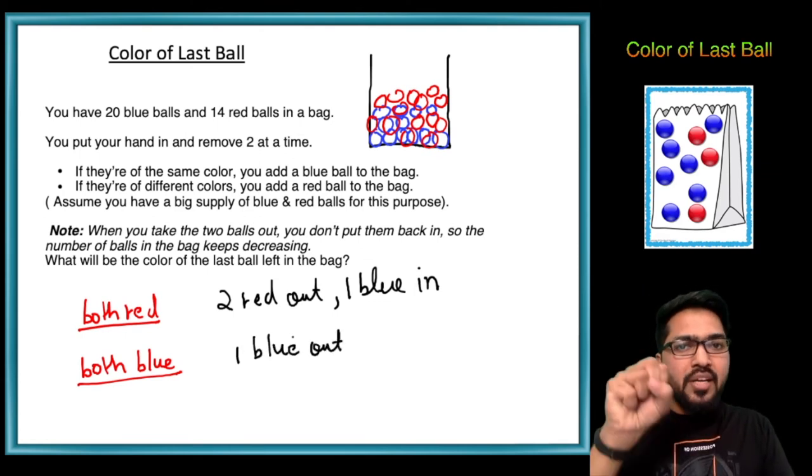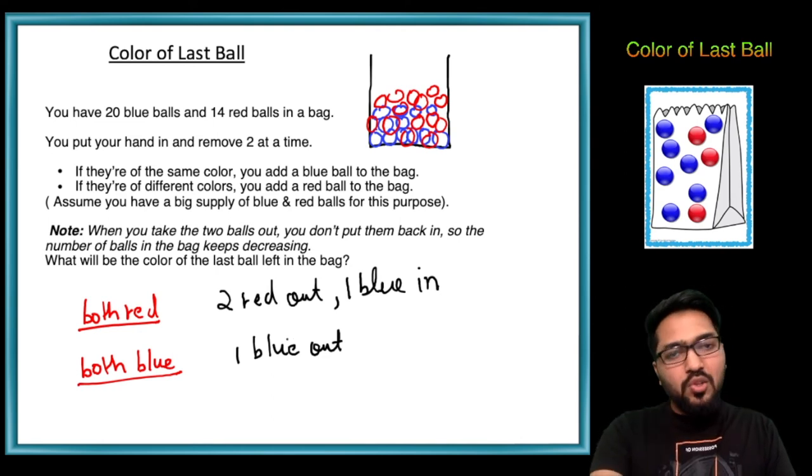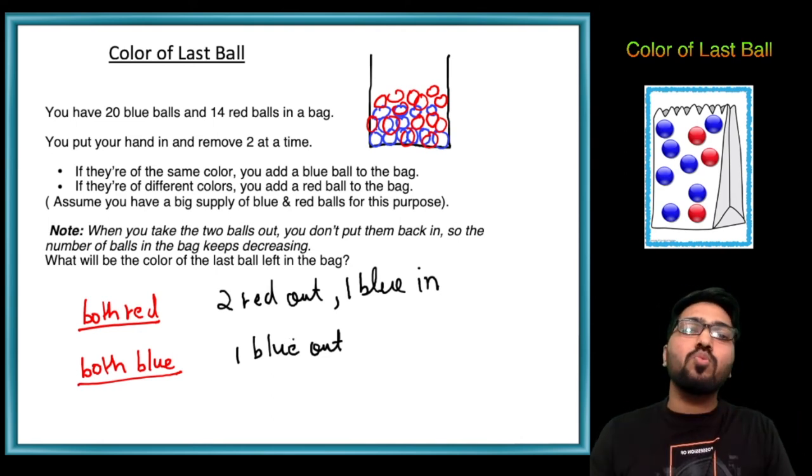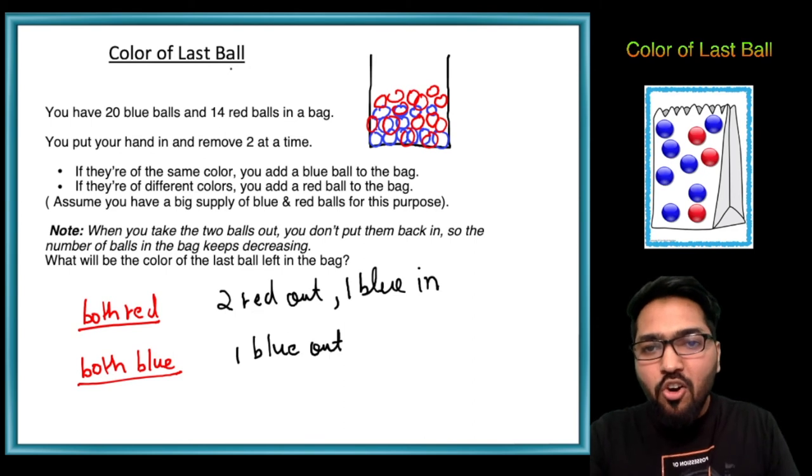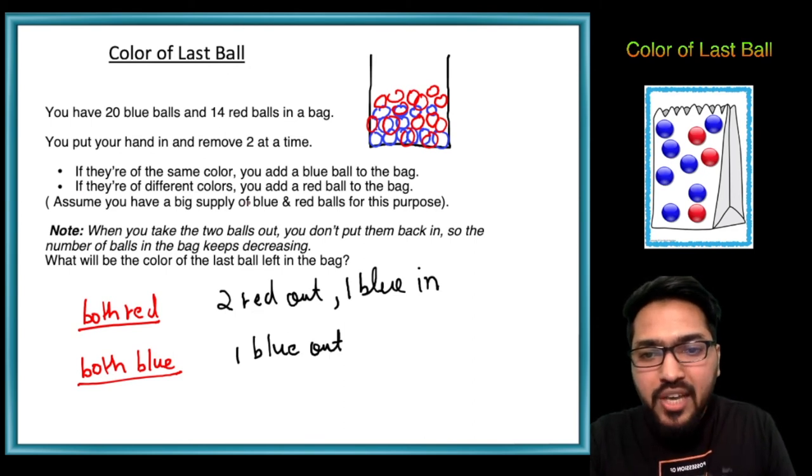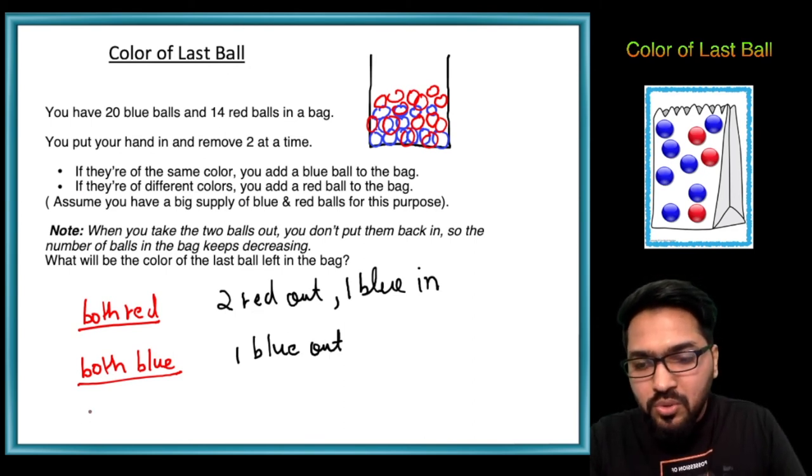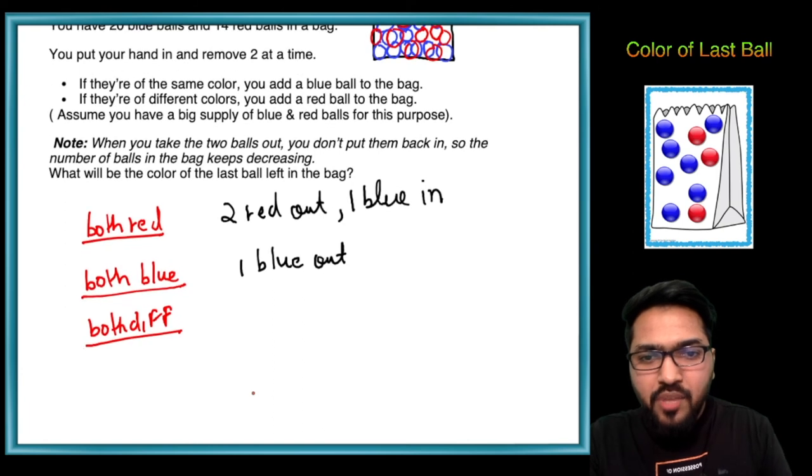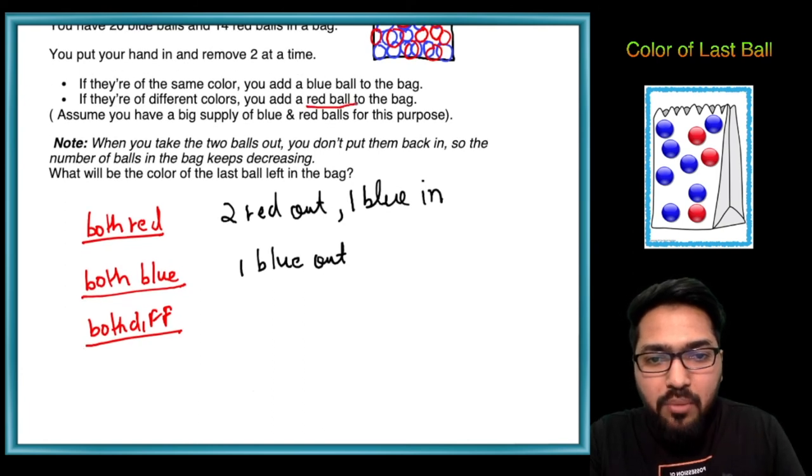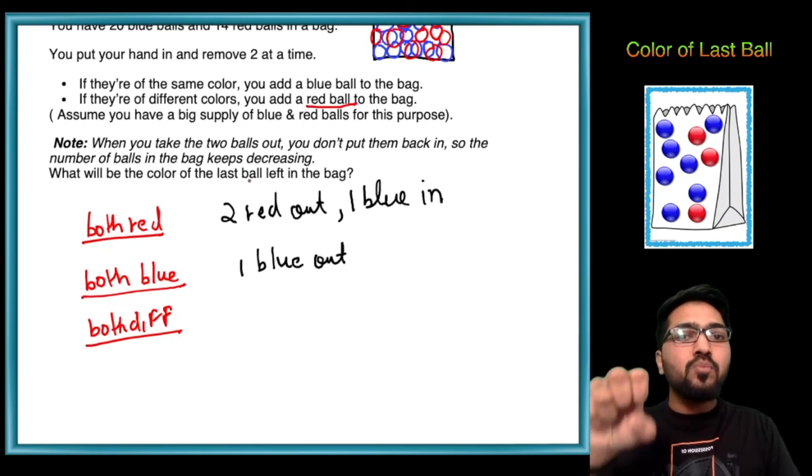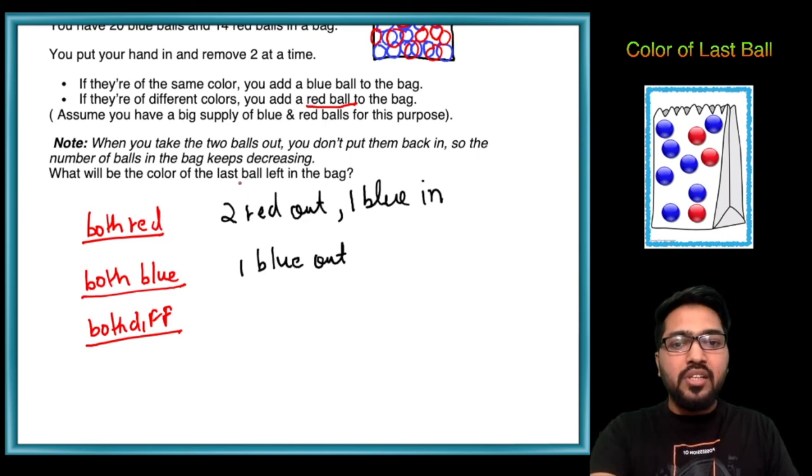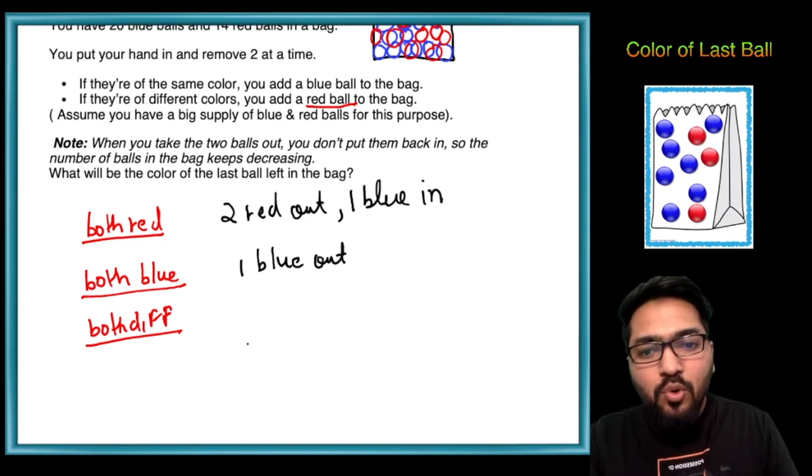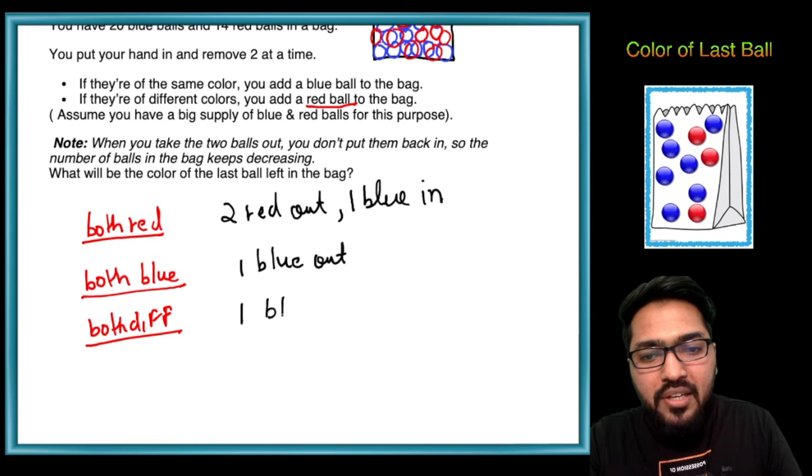Our third case is if they are of different colors, both different. Then in that case you add a red ball to the bag. Basically one red and one blue are taken out and one red is put back in, so effectively we're removing one blue.